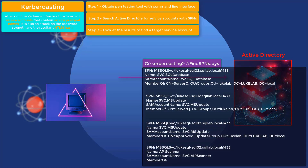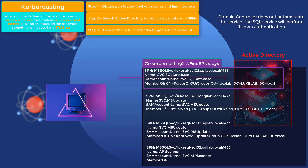Third step: the script will return within the command line a list of Active Directory accounts with SPNs. You will see their names in a format like: MSSQLSvc/SQLServer.SQLlab.local:1433. Within your command line, a list appears with service accounts and their associated SPNs. We can then request tickets from the domain controller associated with the SPN, because the domain controller isn't going to authenticate us for the service — the domain controller lets the server do the authenticating.